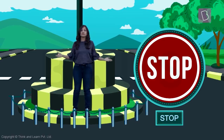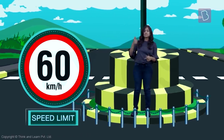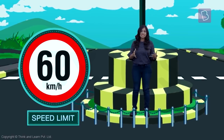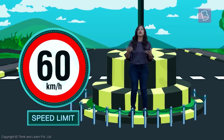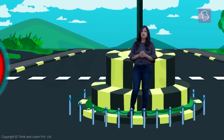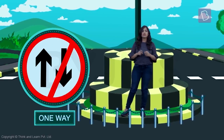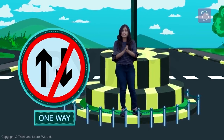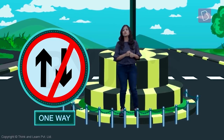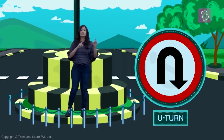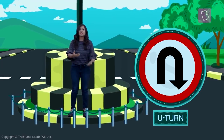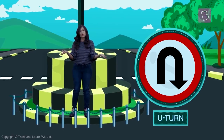The number on this sign shows the speed limit — basically the fastest speed at which you can drive on that particular road. This is a one-way sign, meaning vehicles can only move in one direction on that road. And that is a U-turn sign, which means there is a place ahead where a car can take a U-turn — very useful if you've gone the wrong way.